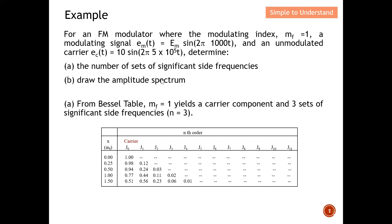For part a — how many sets of significant side frequencies? Using the Bessel function table with modulation index equal to one, I can see the carrier component and three sets of significant side frequencies: one, two, three. So the answer is: I have a carrier component with three sets of significant side frequencies. Now for part b I need to draw the amplitude spectrum.